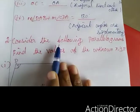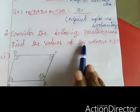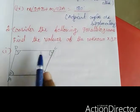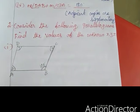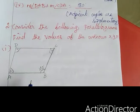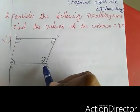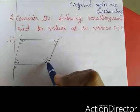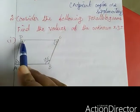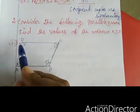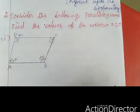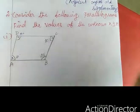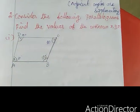Now, Exercise 3.3 second sum. Consider the following parallelograms and find the values of the unknowns X, Y, Z. First subdivision: opposite angles are equal, therefore Y equal to 100 degrees. Next, adjacent angles are supplementary, so Y plus Z equal to 180 degrees. Since Y is 100, Z equal to 180 minus 100, that is 80 degrees.